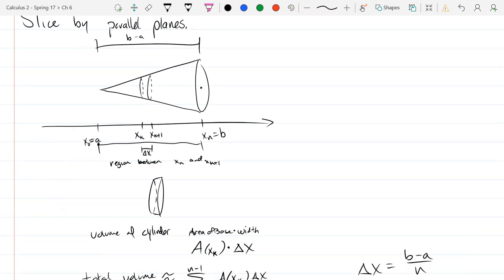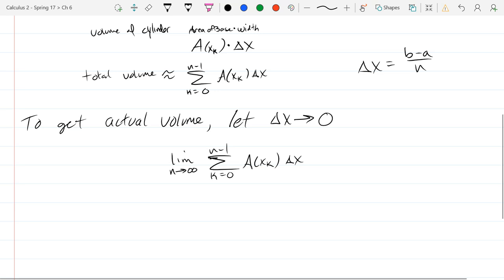So as we send n to infinity, we're cutting into an infinite number of pieces, the width is infinitely small. And this is, in calculus, the integral from a to b, ax. And the delta x becomes dx. So this is the anti-derivative, or the integral, of the area function times dx from a to b.